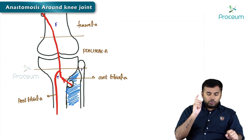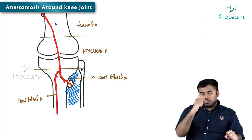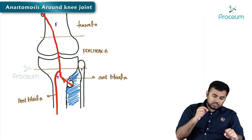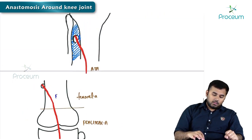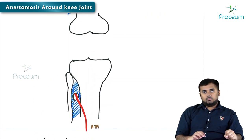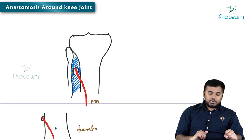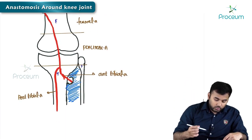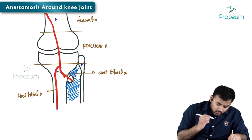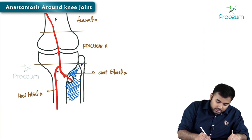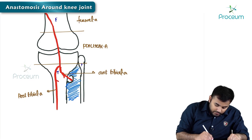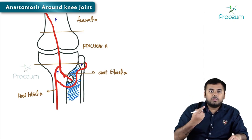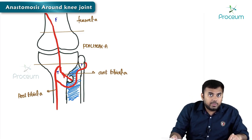This popliteal artery divides into two: one is called posterior tibial artery and one is called anterior tibial artery. This anterior tibial artery will come to the front. Now the posterior tibial artery will give a branch — this branch makes a circle around the neck of the fibula, not the tibia — the fibula. So this is called the circumflex fibular artery.